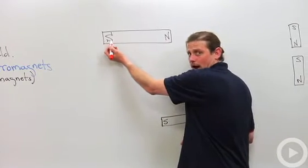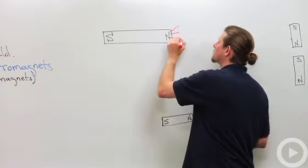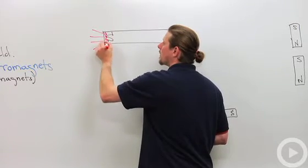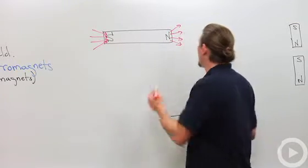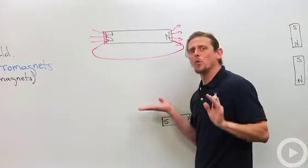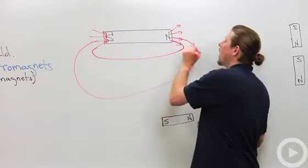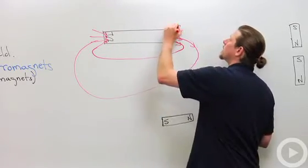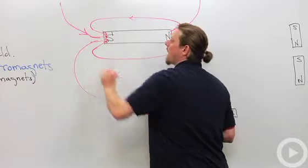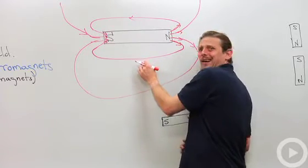We've got our north pole and our south pole. Magnetic field lines come out of the north pole and go into the south pole. These north pole lines come around and, just like with electric fields, they spread out when there's room to do so. When they're close together, that represents a stronger magnetic field. Notice that the magnetic field is strongest at the poles and weaker in between.